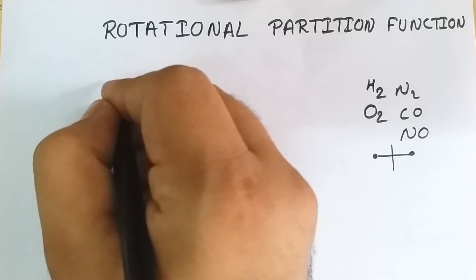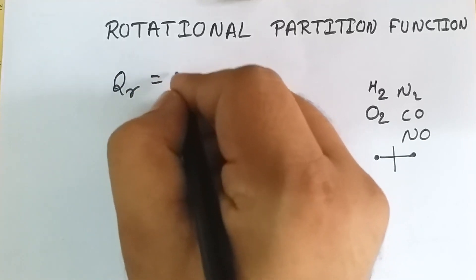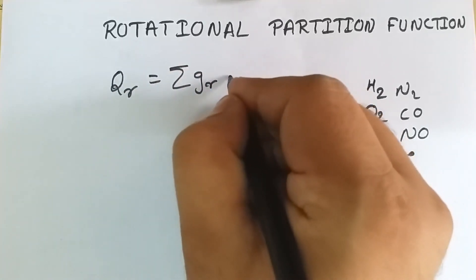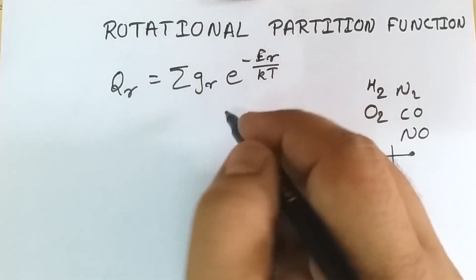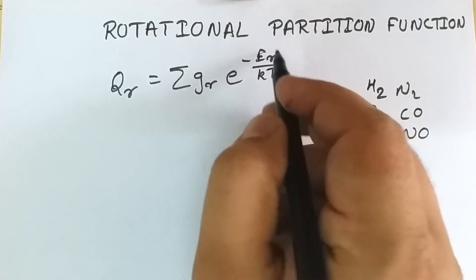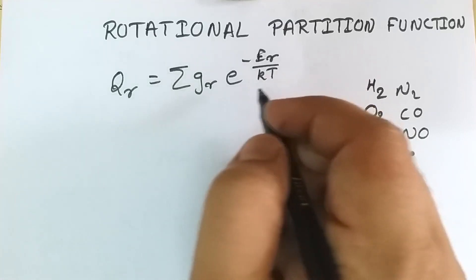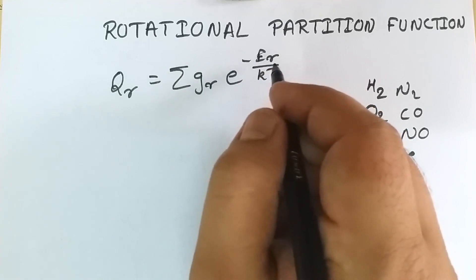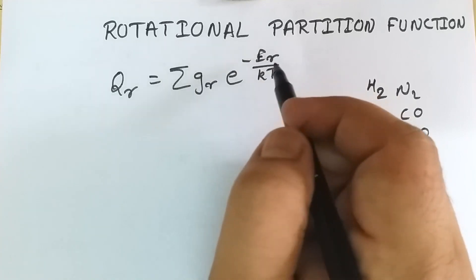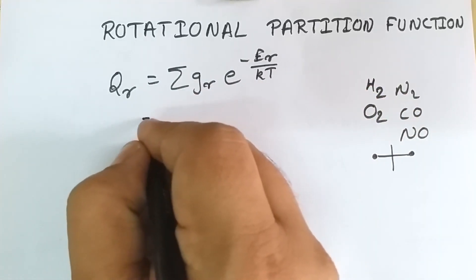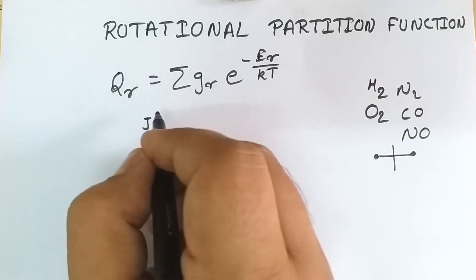The partition function associated with rotational energy is known as the rotational partition function. The rotational partition function qr will be written as a summation of gr times e raised to minus Er upon kT, where gr is the statistical weight factor and Er is the rotational energy. From quantum mechanics, the rotational energy of any diatomic molecule present in the jth state is given by a specific formula.